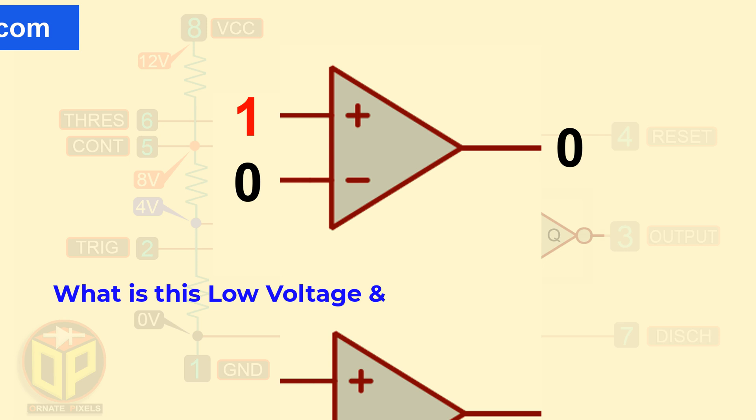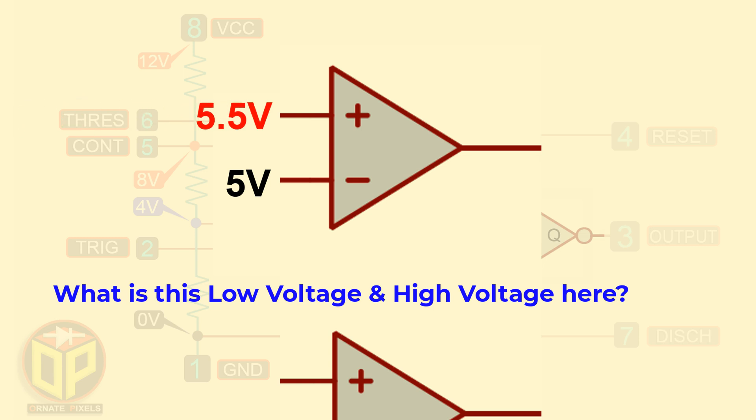What is this low voltage and high voltage here? Suppose, there are 5 volts here and 5.5 volts here. This 5.5 volts is higher than 5 volts. So, this 5.5 volts is high or logically 1 and this 5 volts is lower than 5.5 volts. So, 5 volts is low or logically 0.